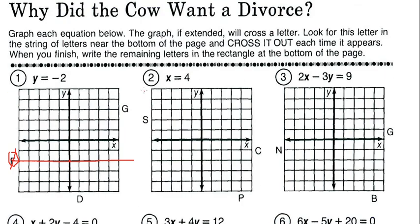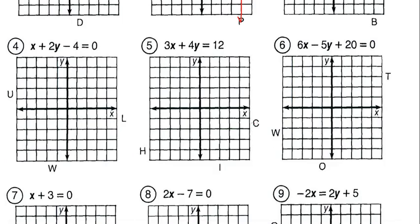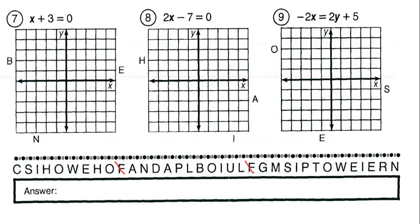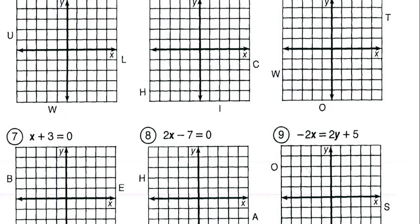Question 2: x equals 4. Let's count 1, 2, 3, 4 — x equals 4 is a straight vertical line right there, going straight through P. Let's cross out that P.